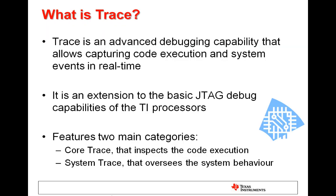Trace is very useful to perform advanced debugging on embedded systems as it expands the basic JTAG debugging by performing real-time data gathering of several aspects of the embedded processor. In its most traditional form, trace captures and stores all the instructions executed by the CPU in real-time, thus allowing users to find complex or intermittent bugs in the system. This is called core or instruction trace. Certain TI embedded processors can also capture system events in real-time, such as memory interface throughput and power domain status, thus allowing users to find system-wide problems during runtime. This is called system trace.